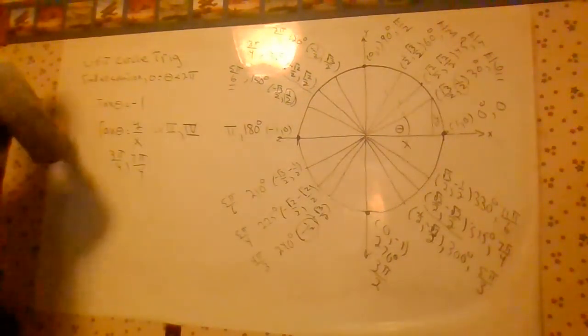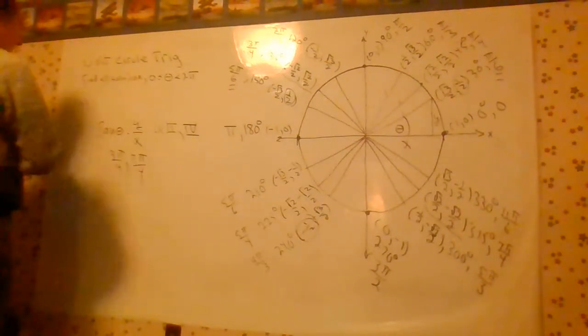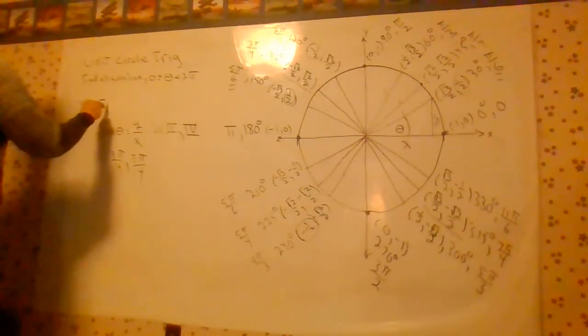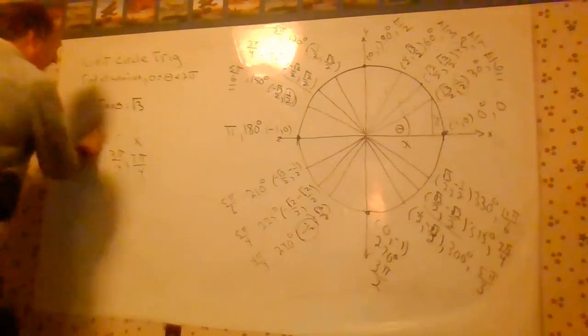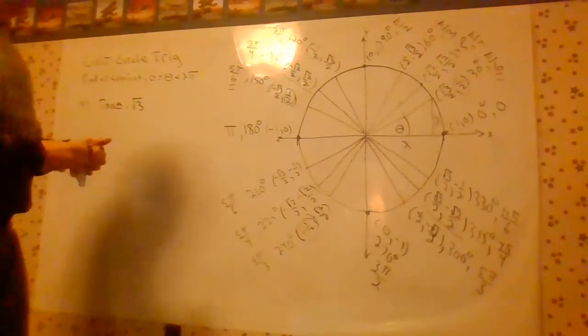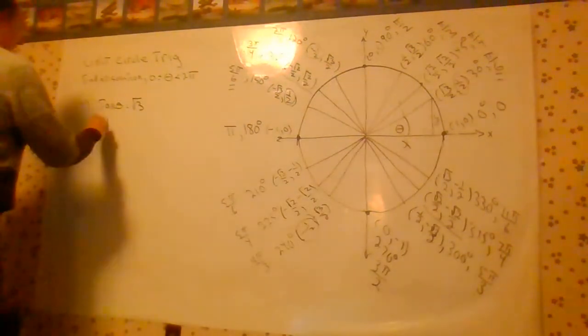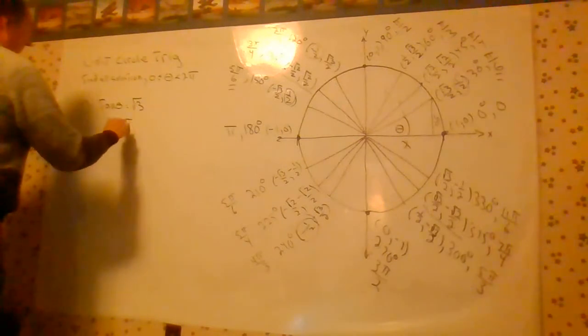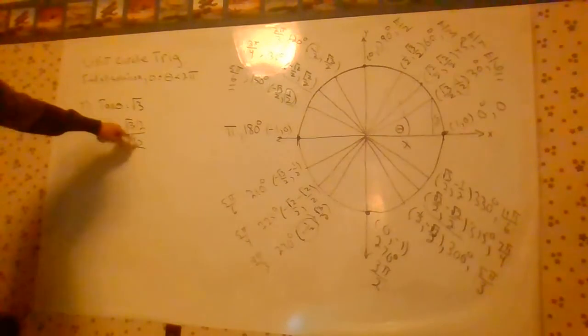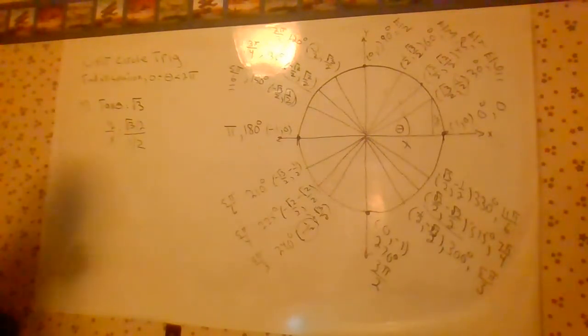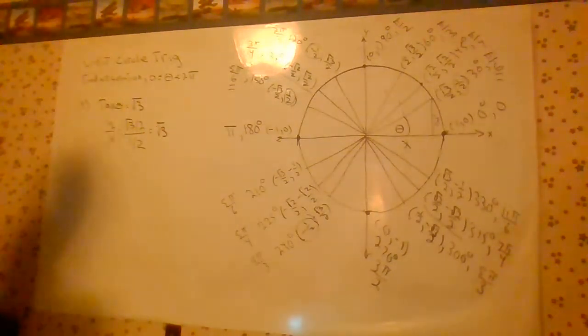Here's another example. Tangent theta equals square root of three. A little harder to find that. But keep in mind, if we have Y over X equals square root of three over two divided by one half, these two's cancel. It's an interesting fraction cancellation technique. And that gives you square root of three over one, or just square root of three.